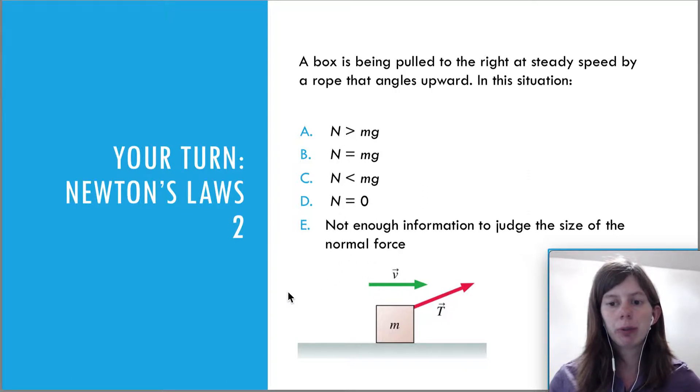So if we draw a free body diagram for this object, we have the normal force. And again, I'm not supposed to draw the surface, I just like to draw the surface. It helps me know exactly which way that normal force is going. We have the weight, and we have a diagonal force here, the tension.